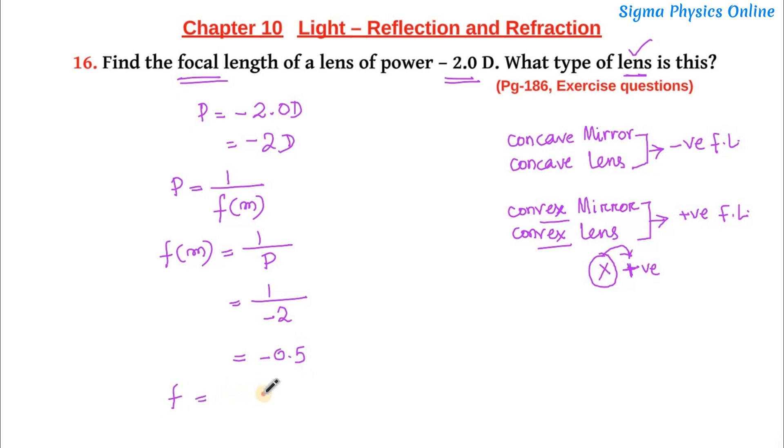So that is 1 by substituting values of power that is minus 2, so that is minus of 0.5. So the focal length is equal to minus 0.5 meter. So the focal length of this lens is minus of 0.5 meter but we know the focal length of a lens is expressed in centimeter.